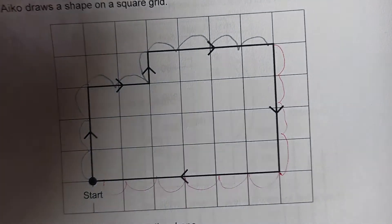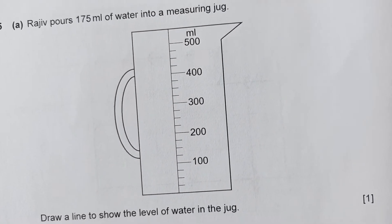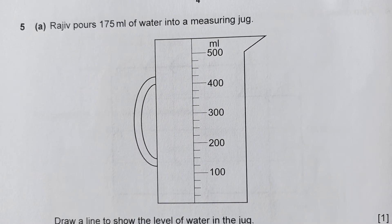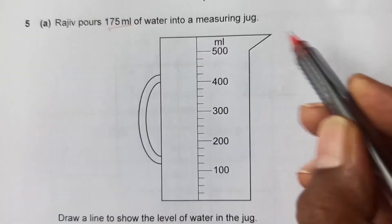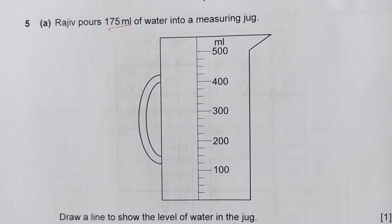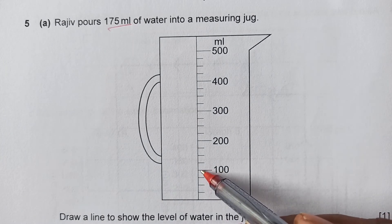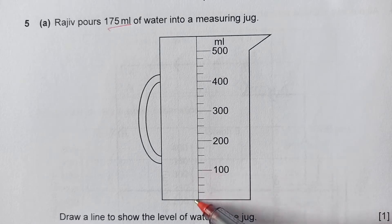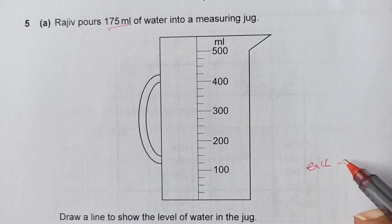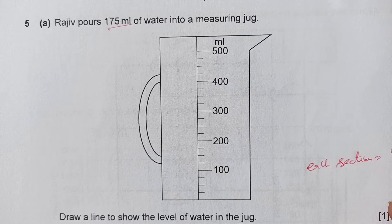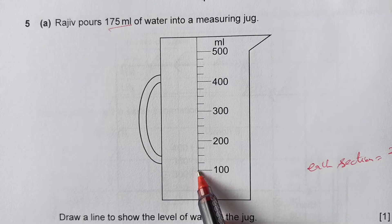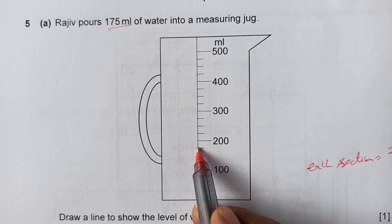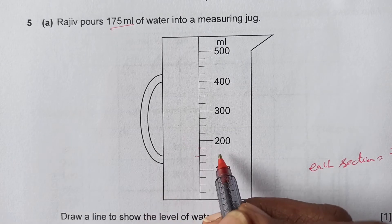Number 5a: Rajiv pours 175 ml of water into a measuring jug. Draw a line to show the water level. We have 100 at the bottom marking, with four sections, so each section represents 25 ml. Counting up: 25, 50, 75, 100, then 150, and 175 will be one section above 150 — draw the line there.